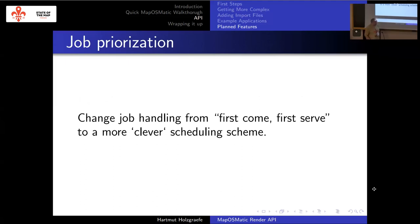There is also the problem that originally MaposMatic only had one single render queue and everything was processed in order — first in, first out. Now with the addition of an API, interactive requests and API requests can compete for resources. A misbehaving API client can submit requests much faster than an interactive user can. I've solved this by having two different render queues: one for interactive requests and one for API requests. That is not live now but I'm going to roll it out next week. API clients can still starve each other, but at least they do not impact the interactive experience.